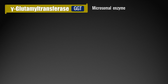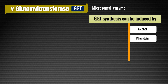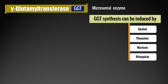Gamma glutamyl transferase, also known as GGT, is a microsomal enzyme expressed in the endoplasmic reticulum of hepatobiliary tract cells or membrane cells. GGT enzyme synthesis can be induced by alcohol or various drugs like phenytoin, used to treat epilepsy; warfarin, an anticoagulant; and rifampicin, an anti-TB drug. These drugs and alcohol can induce synthesis of GGT, so in a chronic alcoholic patient or with alcohol abuse, we can expect increased GGT serum levels.